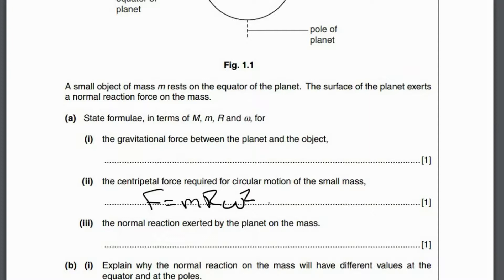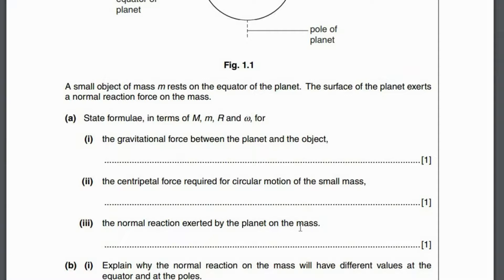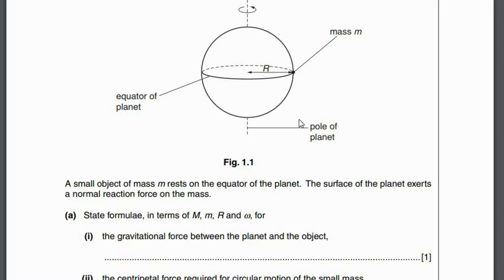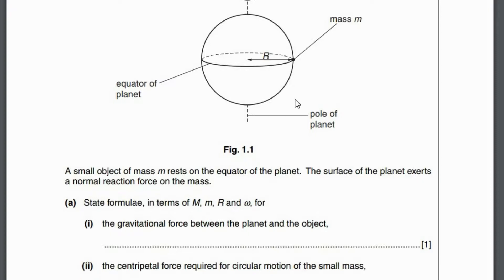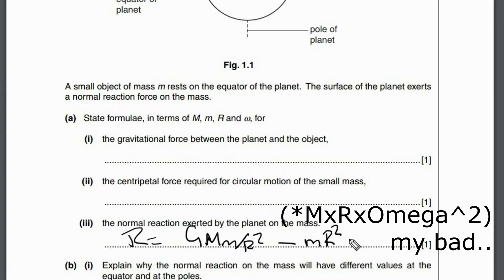For the reaction force exerted by the planet on the mass: the object is going through circular motion, so there must be a resultant force acting towards the center of the circle. The reaction force has to be less than the weight. The difference between the reaction force and weight must equal the centripetal force. So the reaction force is equal to GMm/R² minus mRω².